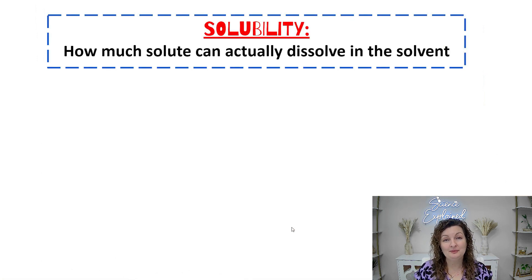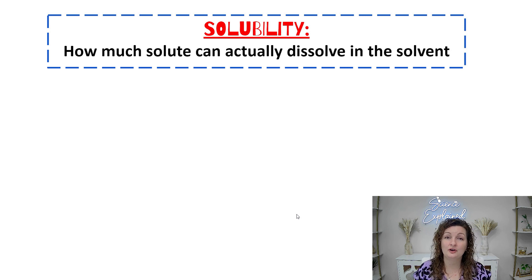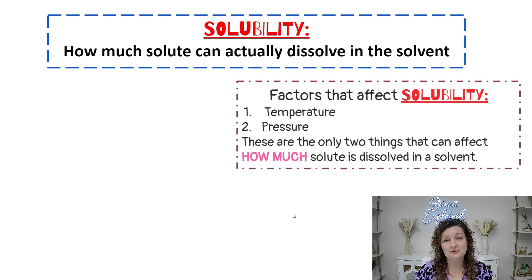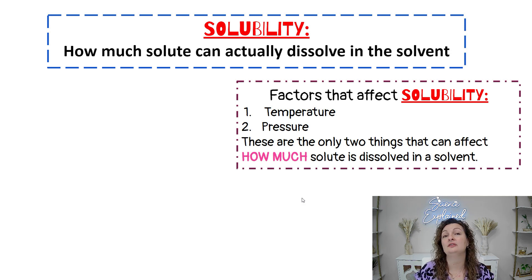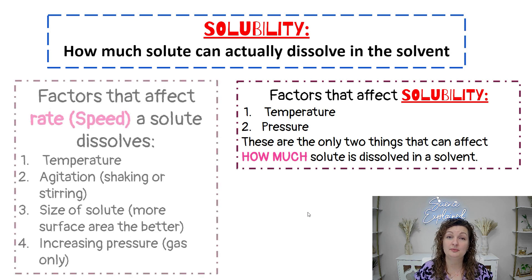The word that you probably have heard before is solubility, and that's just how much solute you can dissolve in your solvent. There are going to be factors that contribute to that — the first one being temperature and the second one being pressure. As these fluctuate, we can either dissolve more or dissolve less of our solute into our solvent, and these can actually be tracked on a solubility curve.